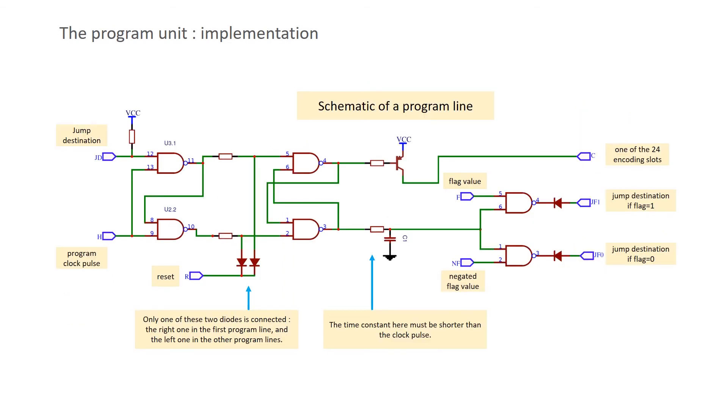The state of each line is memorized by a latch realized with four NAND gates. Two additional gates allow to select the destination of the jump according to the state of the flag.